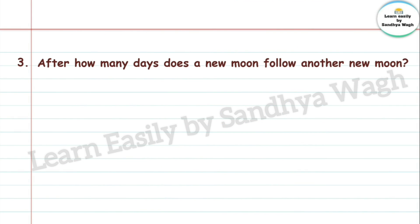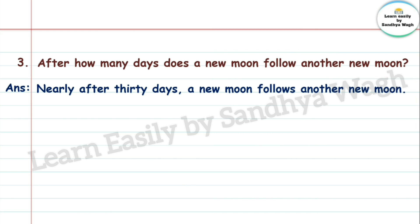Question 3: After how many days does a new moon follow another new moon? Answer: Nearly after 30 days, a new moon follows another new moon.